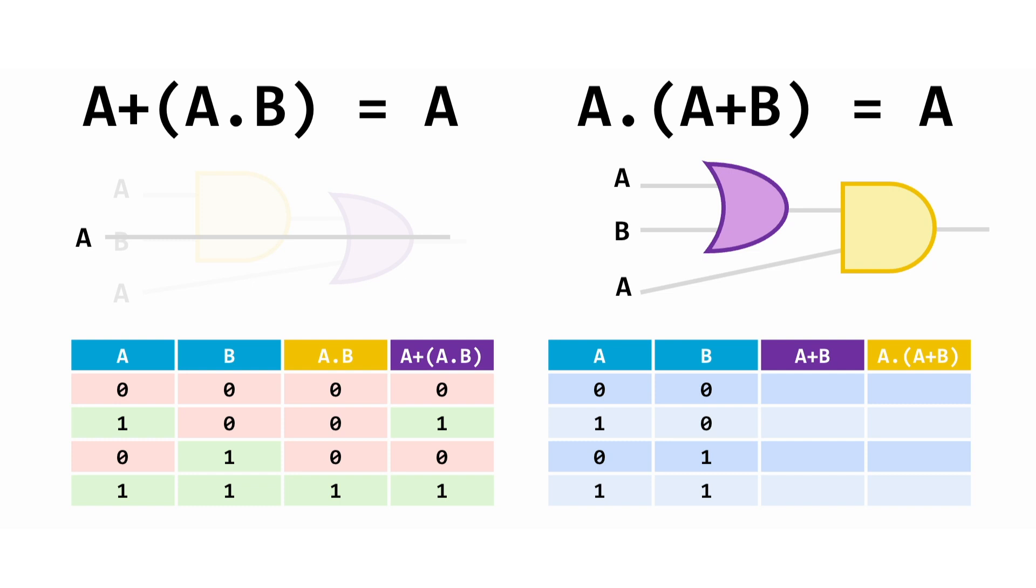Well, when both A and B are set to zero, we get a zero out of the OR gate, which means that the AND gate is giving us a full-on zero. When A is one, that's enough to get a one out of the OR gate. The AND gate then gets two one values and produces a one output.